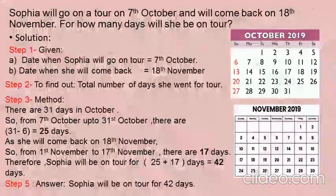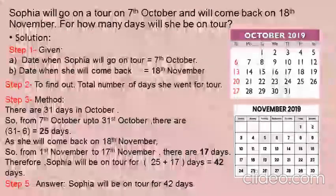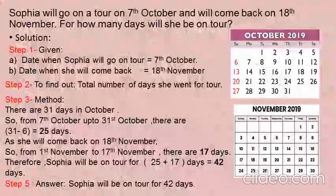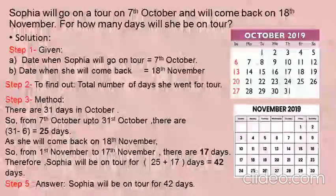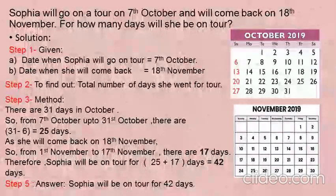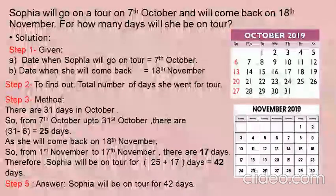Let us study one more example. Sophia will go on tour on 7th of October and will come back on 18th of November. For how many days will she be on tour? Solution: Step 1 — Given: date when Sophia will go on tour is 7th of October; date when she will come back is 18th of November. Step 2 — Find out the total number of days she went on tour.